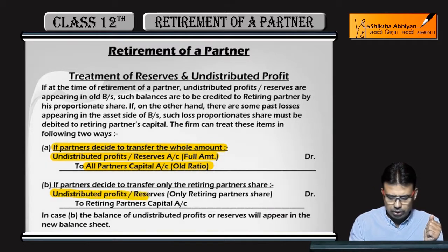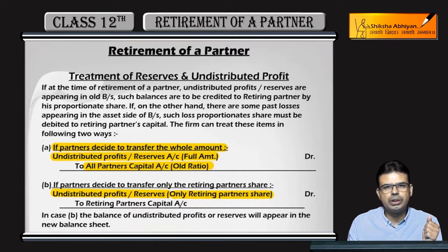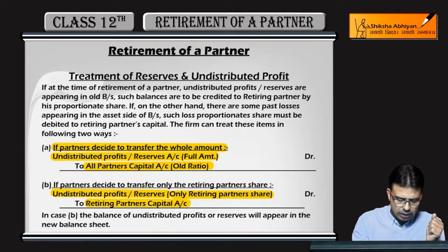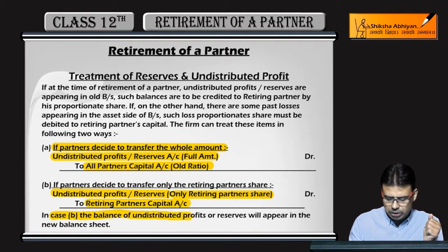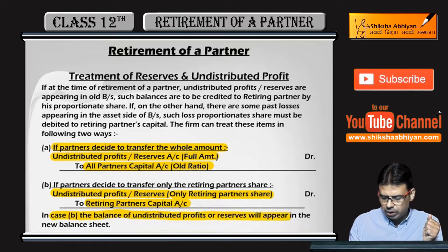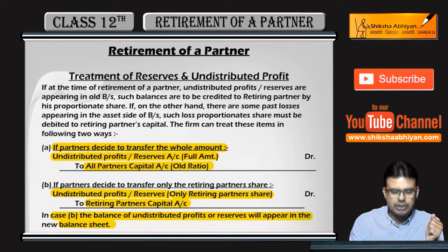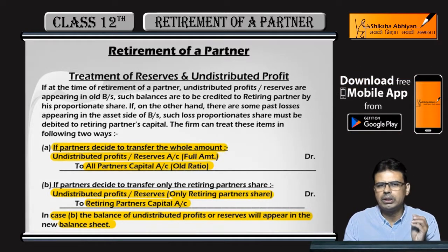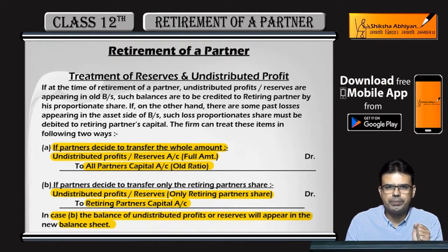The second method: undistributed profits or reserves are debited only for the retiring partner's share, debited to the retiring partner's capital account. In that case, the balance of undistributed profit or reserve appears in the balance sheet as it is. For example, with a 5 lakh reserve in a 2:1 ratio.